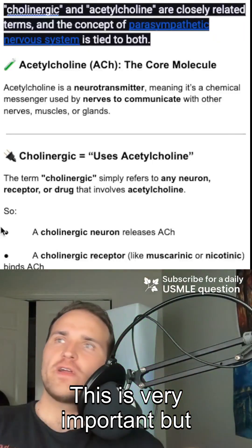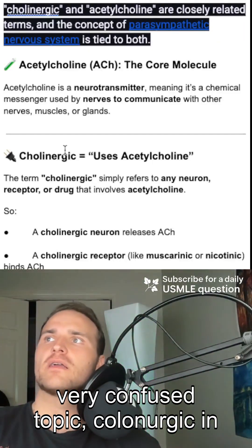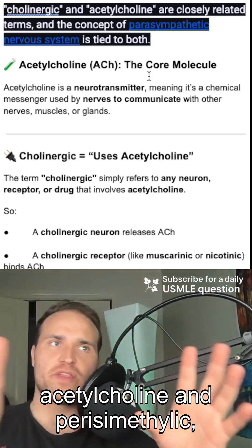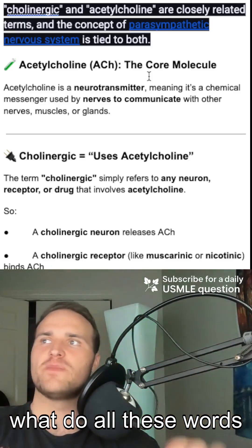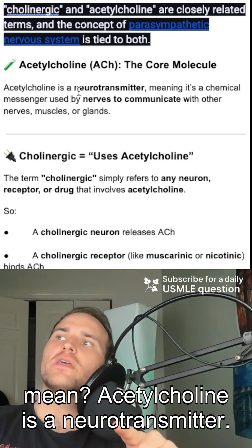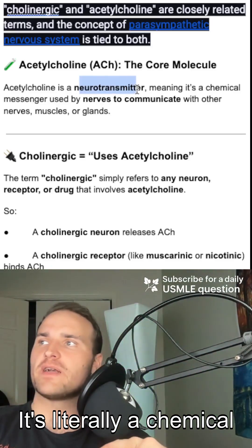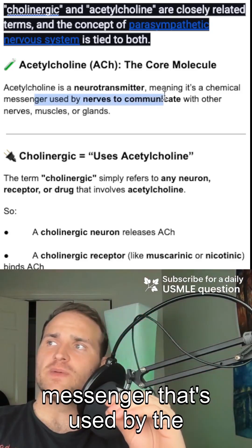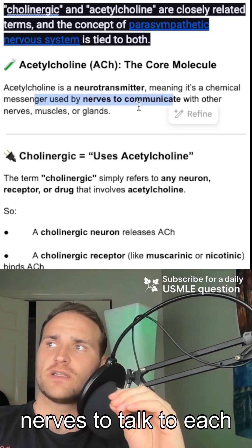This is a very important but very confused topic: cholinergic, acetylcholine, and parasympathetic. What do all these words mean? Acetylcholine is a neurotransmitter — it's literally a chemical messenger that's used by neurons to talk to each other.